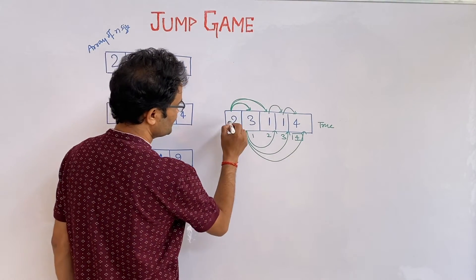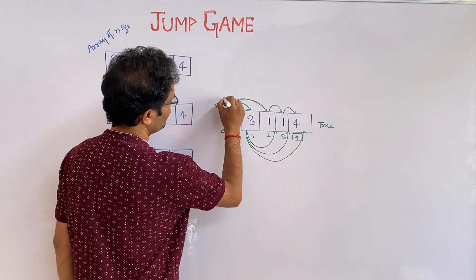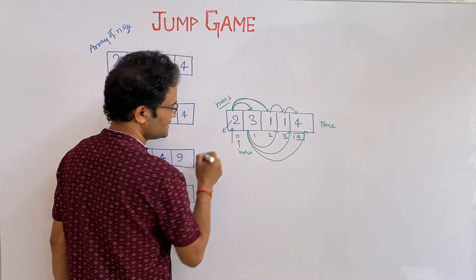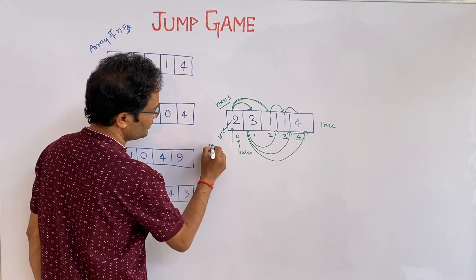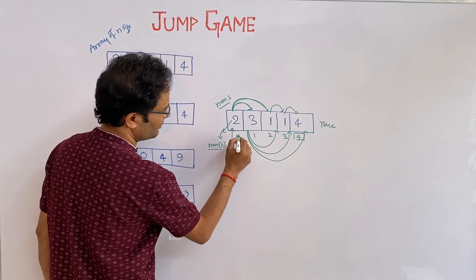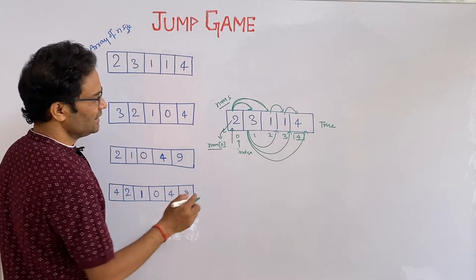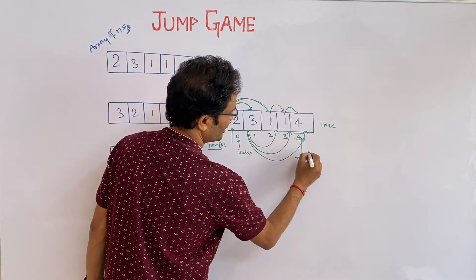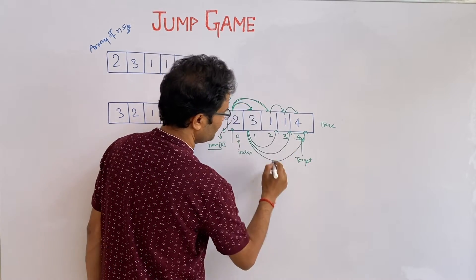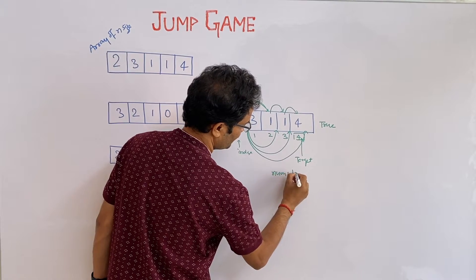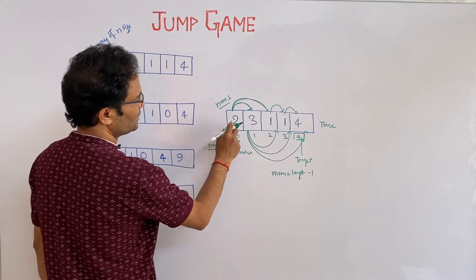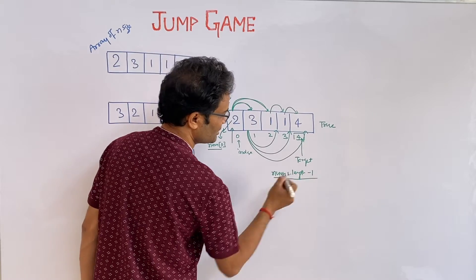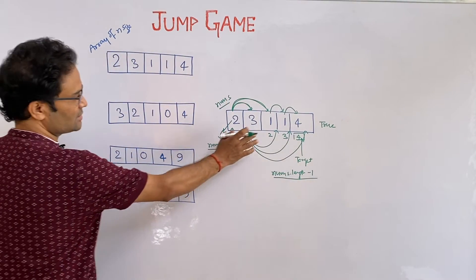Always remember: this is the nums array, this is the index and this is the value. This value we represent as nums[0] and the index. Our target is to reach the final index. The target index is nums.length minus 1 — because the length is 5 and we start at index 0, so index 4 will be nums.length minus 1. In this case we return true.